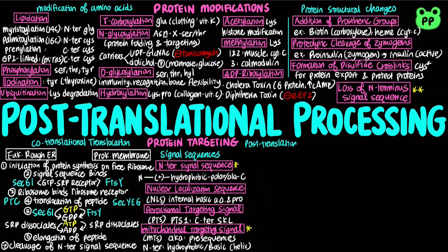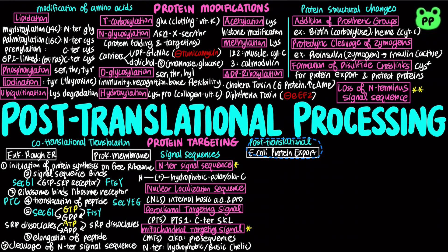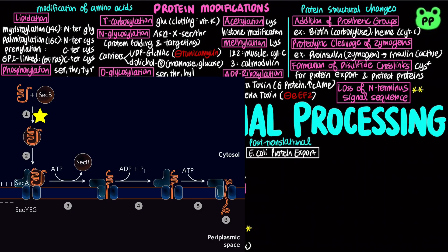Bacteria can export their proteins to their inner or outer membranes or to the extracellular medium, and this occurs post-translationally. First, cytosolic chaperone SEC-B binds the newly translated unfolded polypeptide. Next, SEC-B delivers the polypeptide to SEC-A, a protein associated with the SEC-YEG translocation complex in the bacterial cell membrane.